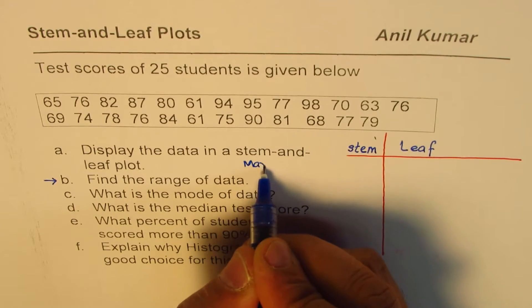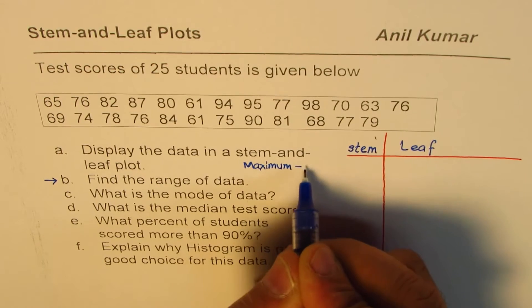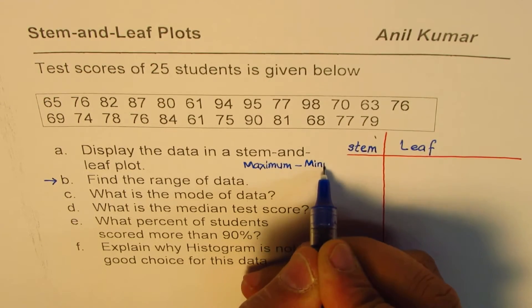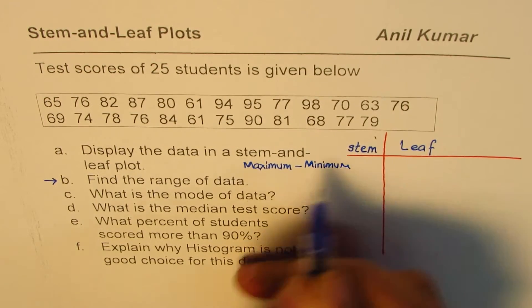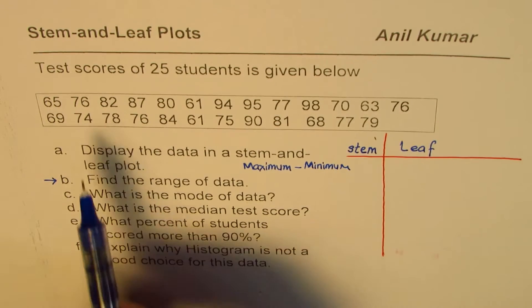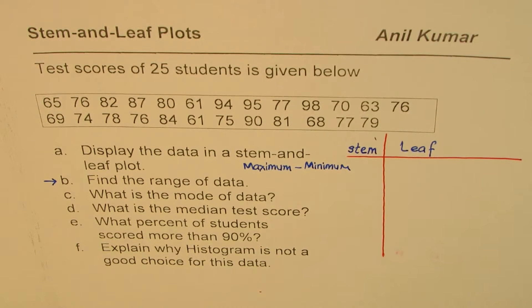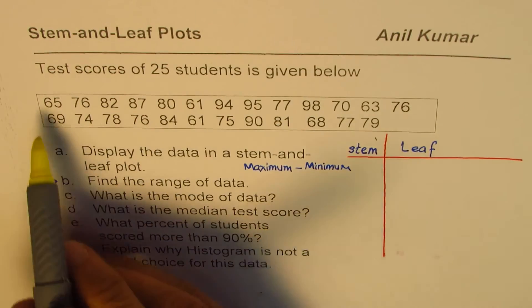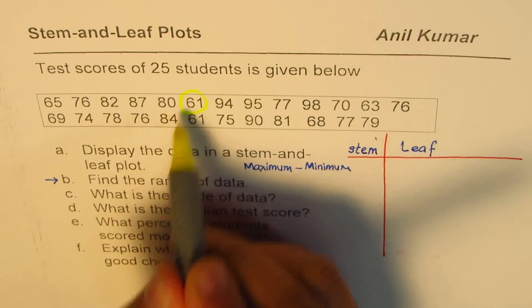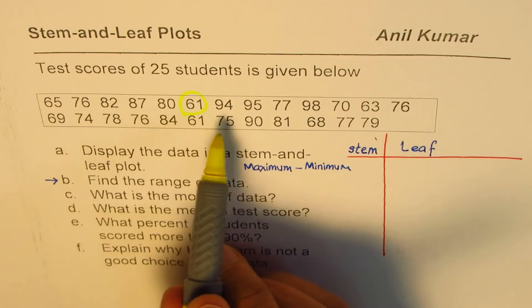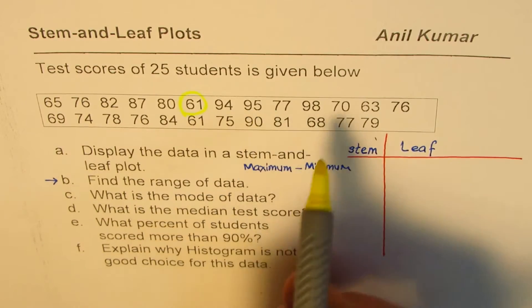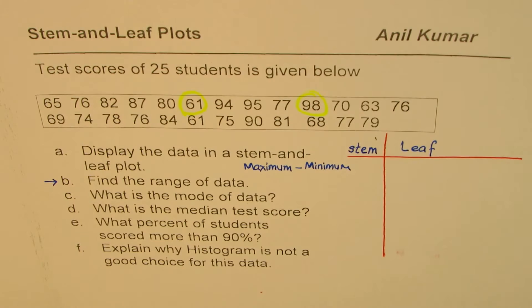What is range? Range is maximum minus minimum. So from this data, identify what score is maximum and what is minimum. If you go through this you can see that 61 is the minimum.